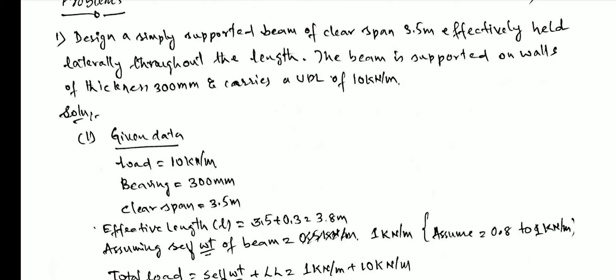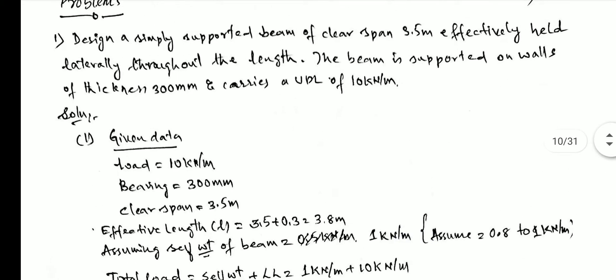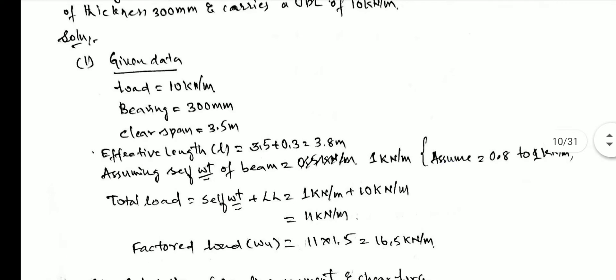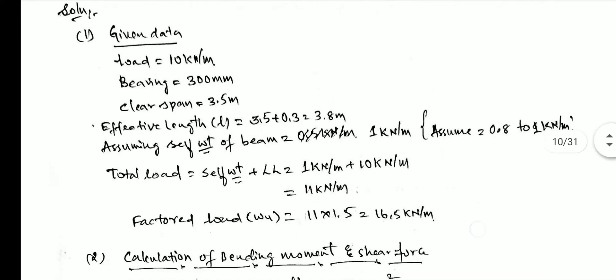Only the live load is given; the dead load (self-weight of the beam) is not given. Since beam dimensions are not yet known, we assume the self-weight of the beam between 0.8 to 1 kN/m. I assume it as 1 kN/m. So the total load = dead load + live load = 1 + 10 = 11 kN/m.